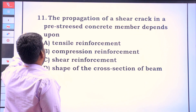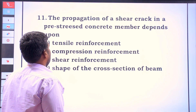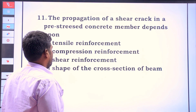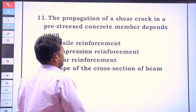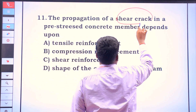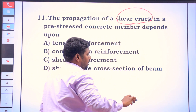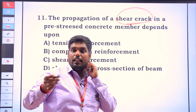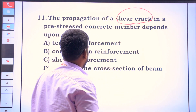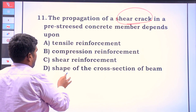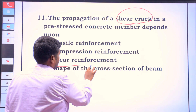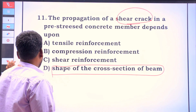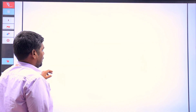The propagation of shear cracks in a pre-stressed concrete member depends upon what? The answer is the shape of the cross-section of the beam. The formula relates: V is equal to P times D.